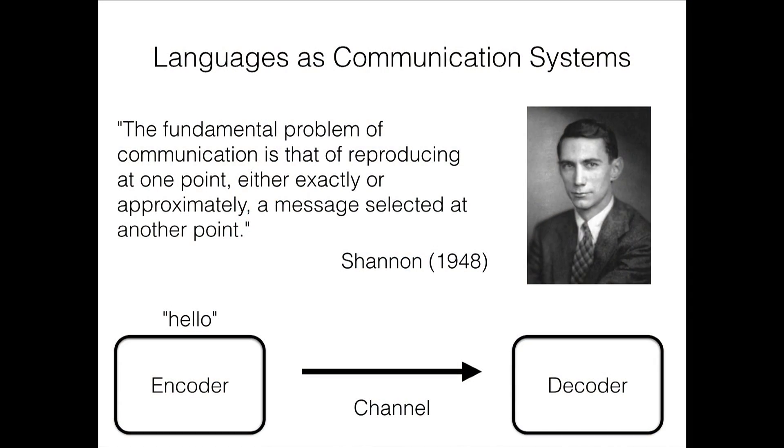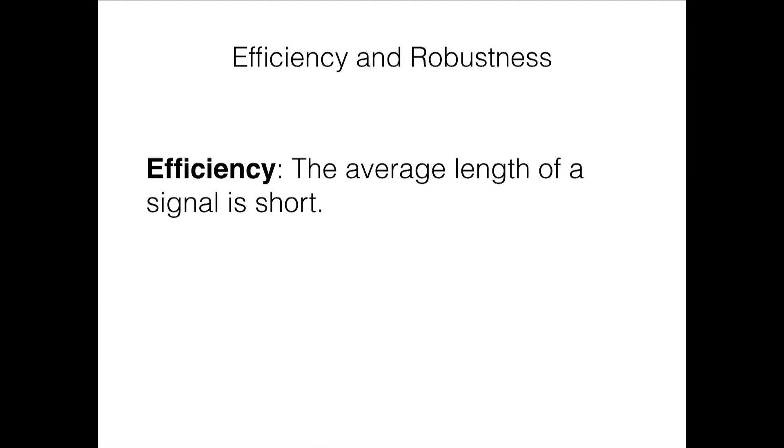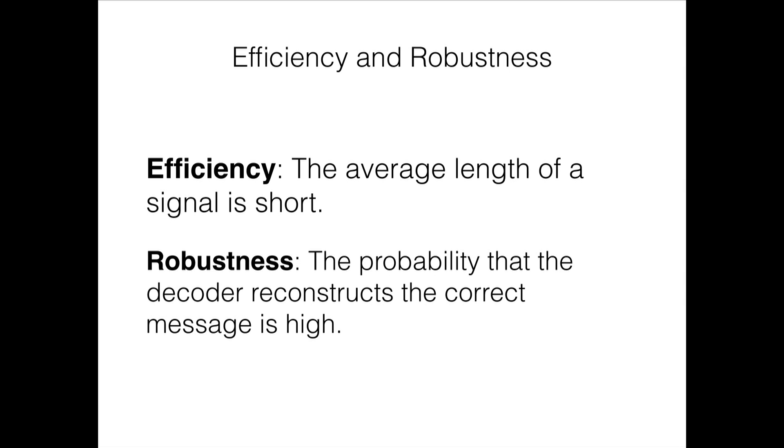In the case of spoken language, the signal is sound waves traveling through the air — that's the channel, and you are the decoder. The encoder encodes a message as a stream of bits and sends it through the channel; the decoder tries to reconstruct the original message. The desirable properties of such a code are efficiency — that the average length of a signal sent through the channel is short — and robustness — that the probability the decoder reconstructs the correct message is high.